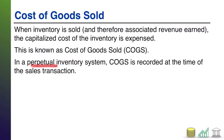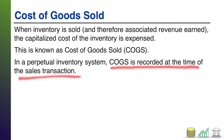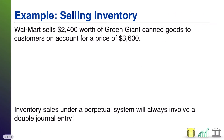In a perpetual system, COGS will always be recorded at the time of the sales transaction. So let's take a look at how this actually plays out. Here I give you an example: Walmart sells $2,400 worth of green giant canned goods to customers on account for a price of $3,600.